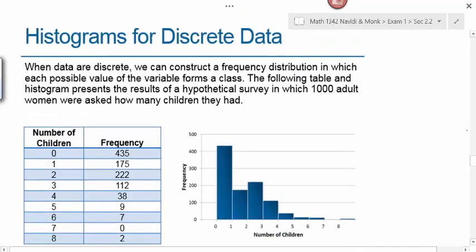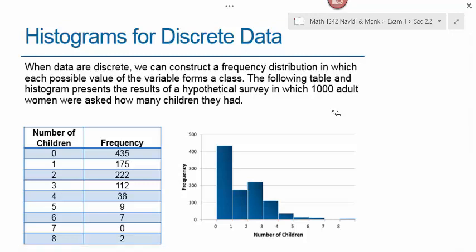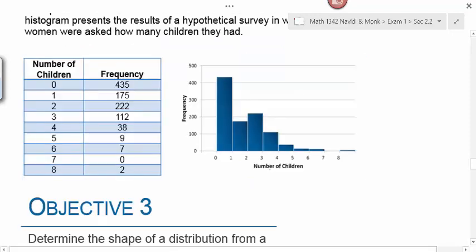Histograms for discrete data: when data are discrete, we can construct a frequency distribution in which each possible value of the variable forms its own class. For example, a study of a thousand adult women asked how many children they have—the number of children is the class. So 435 women had no children, 175 had one, and so forth, with large families at the lower end of the frequency.